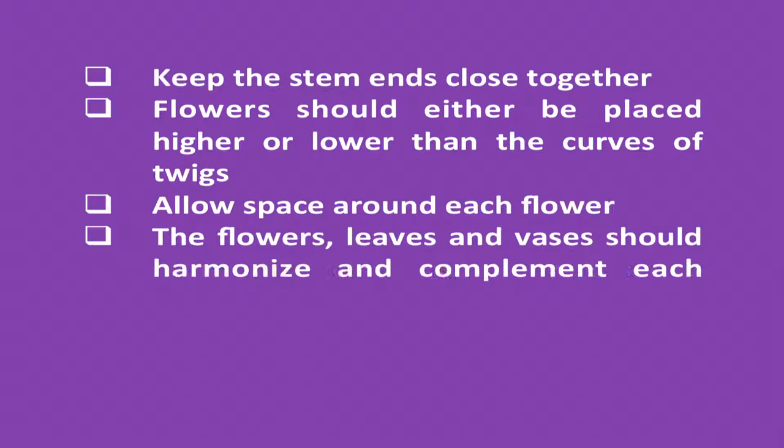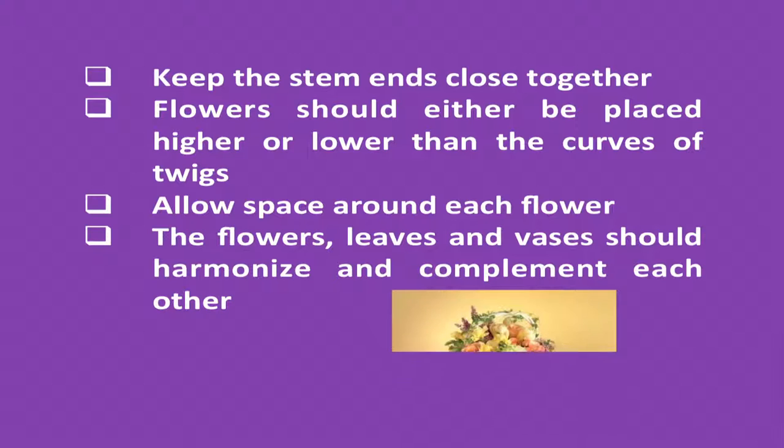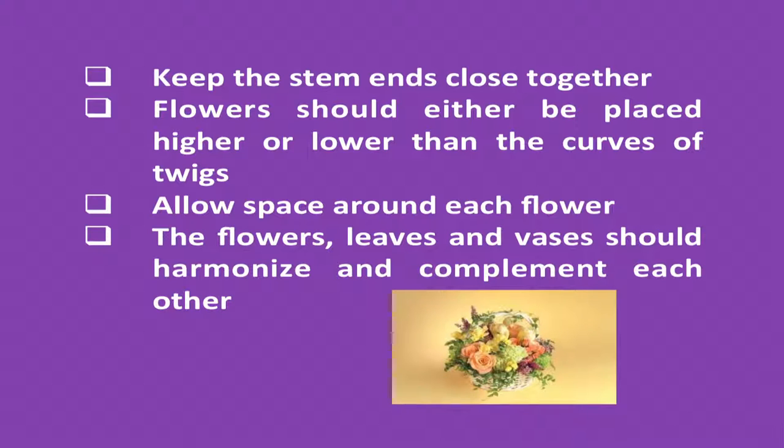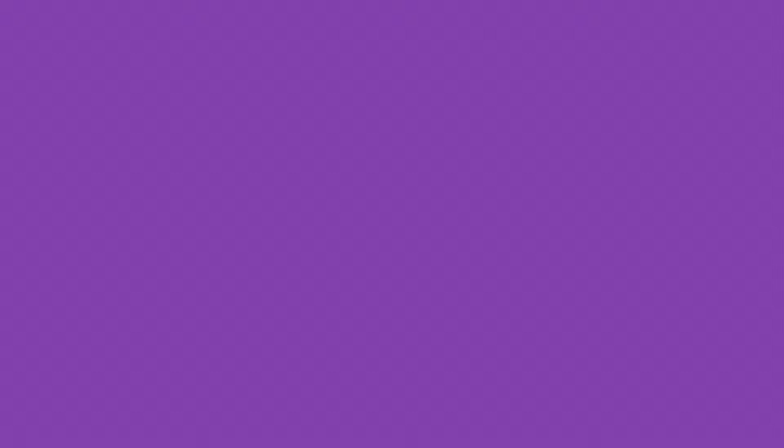Allow space around each flower. The flowers, leaves, and vases should harmonize and complement each other — both should go well together. For starting flower decoration, we need to understand certain terms that are required very frequently in making an arrangement. The first and very important thing is collection of materials. We need to understand what all materials we require before starting flower decoration.